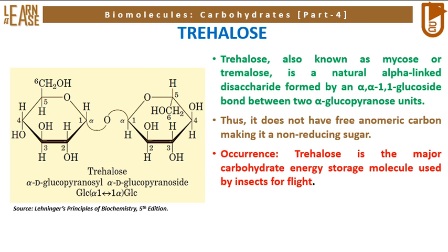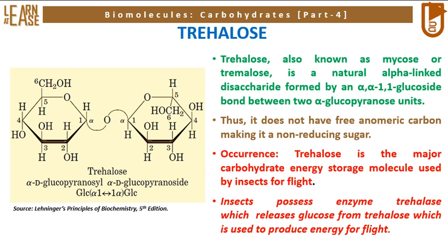Trehalose is the major carbohydrate energy storage molecule used by insects for flight. Insects possess the enzyme trehalase, which releases glucose from trehalose, and this glucose is used to produce energy for flight.